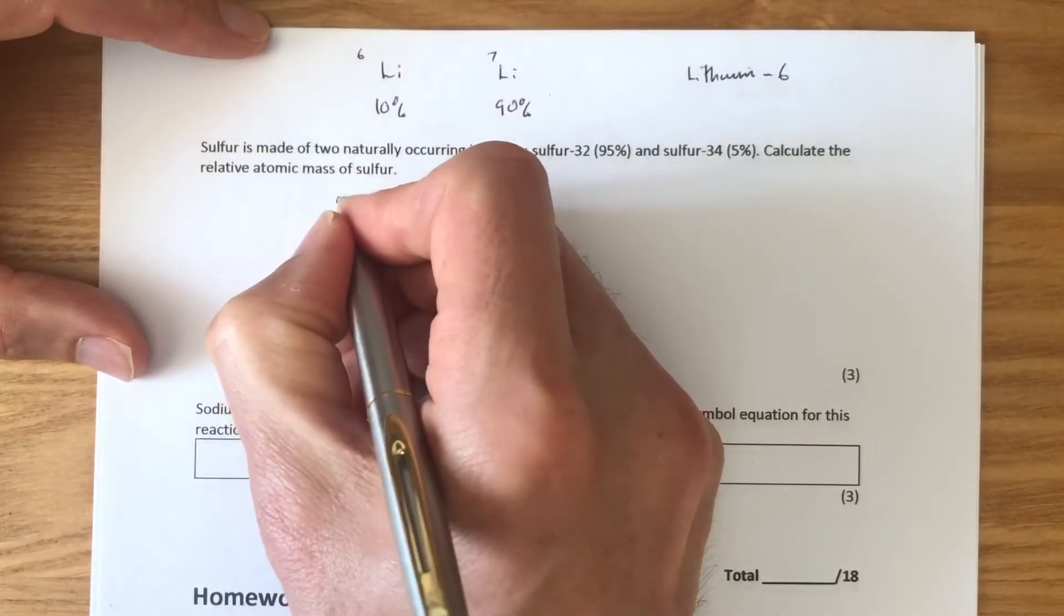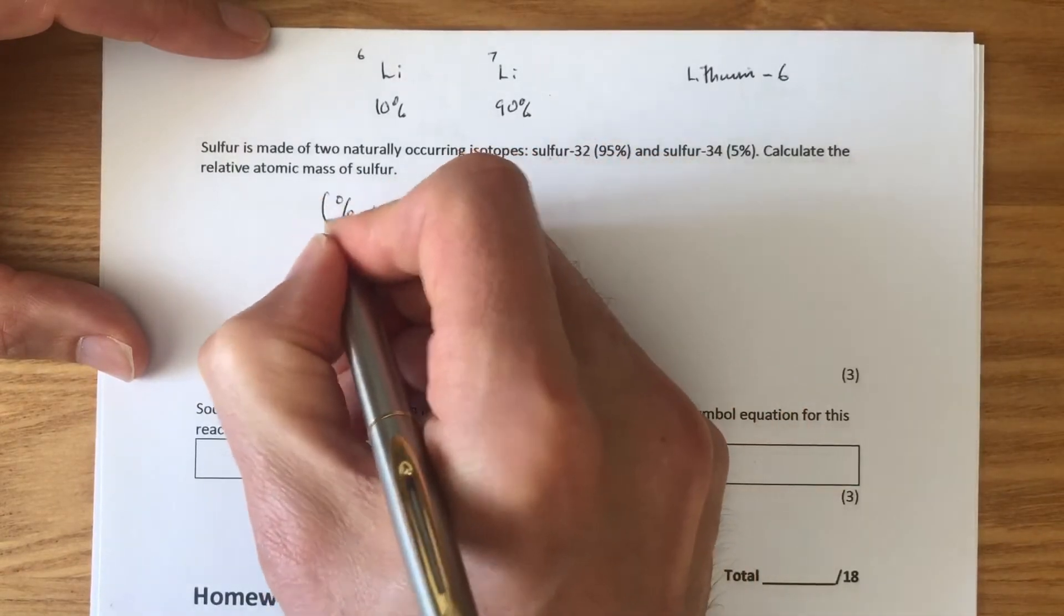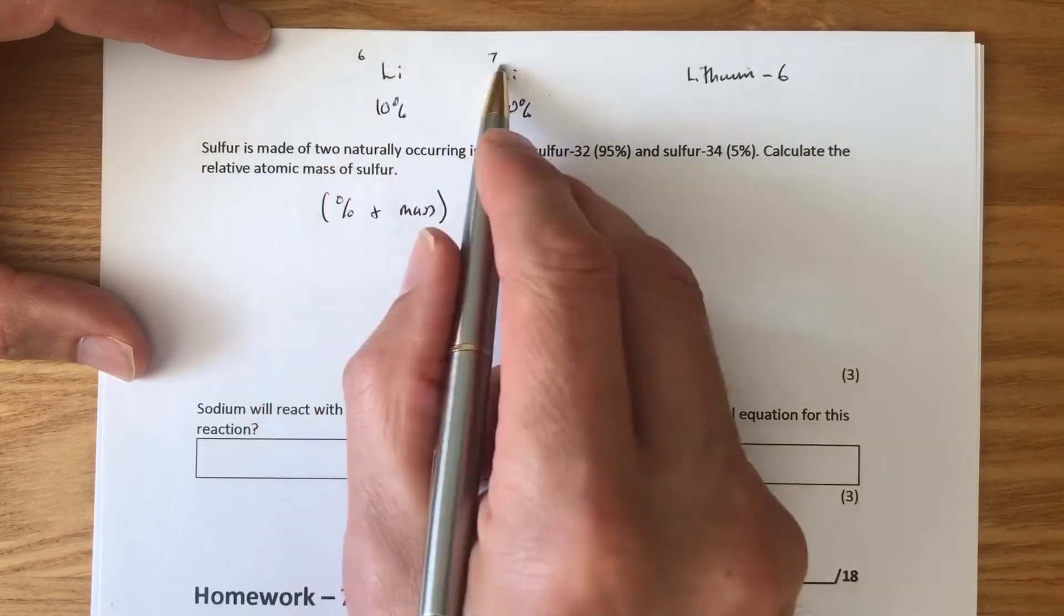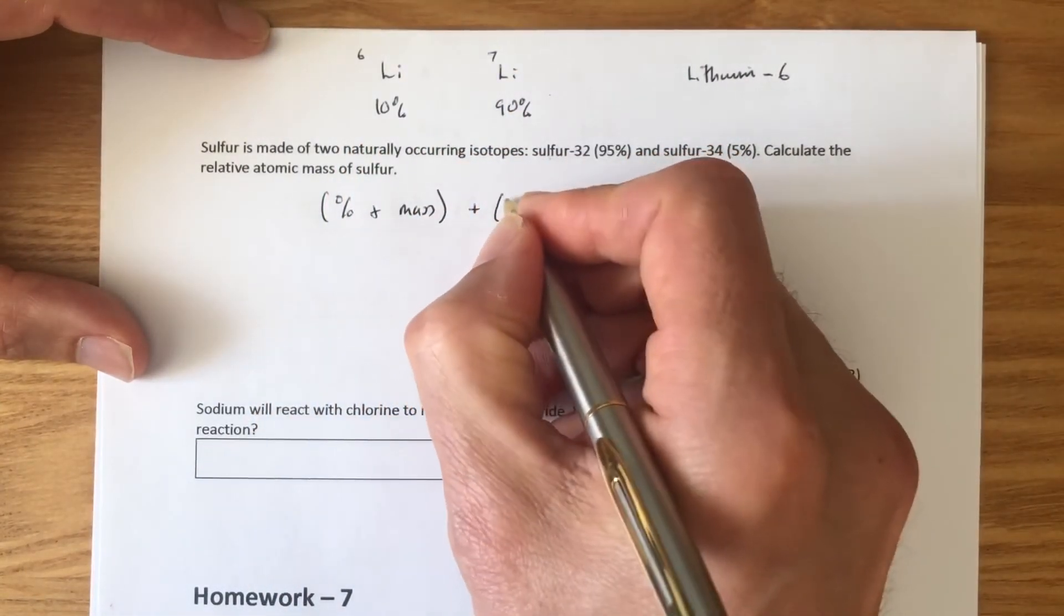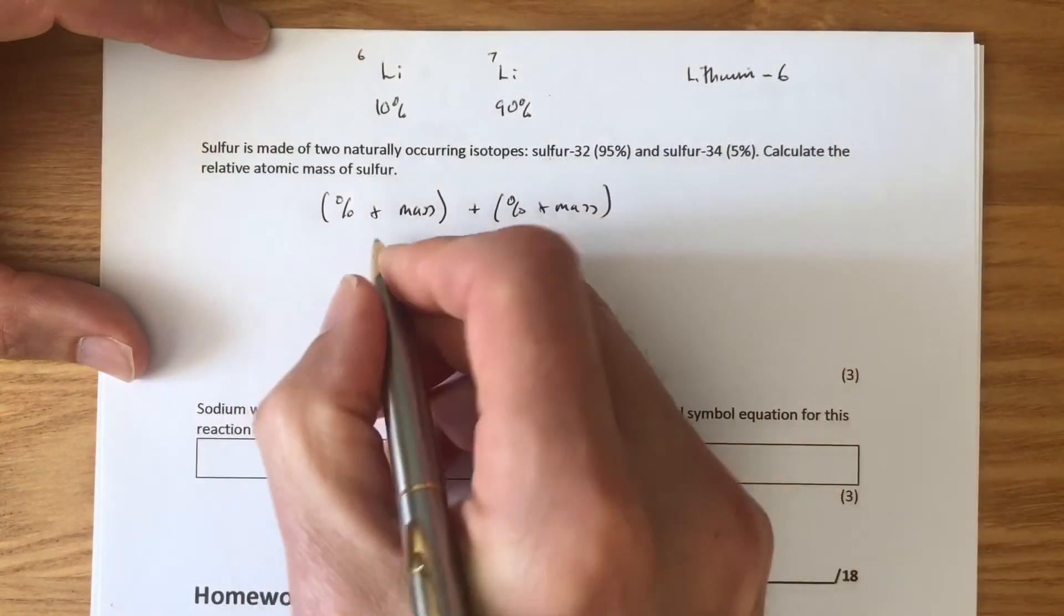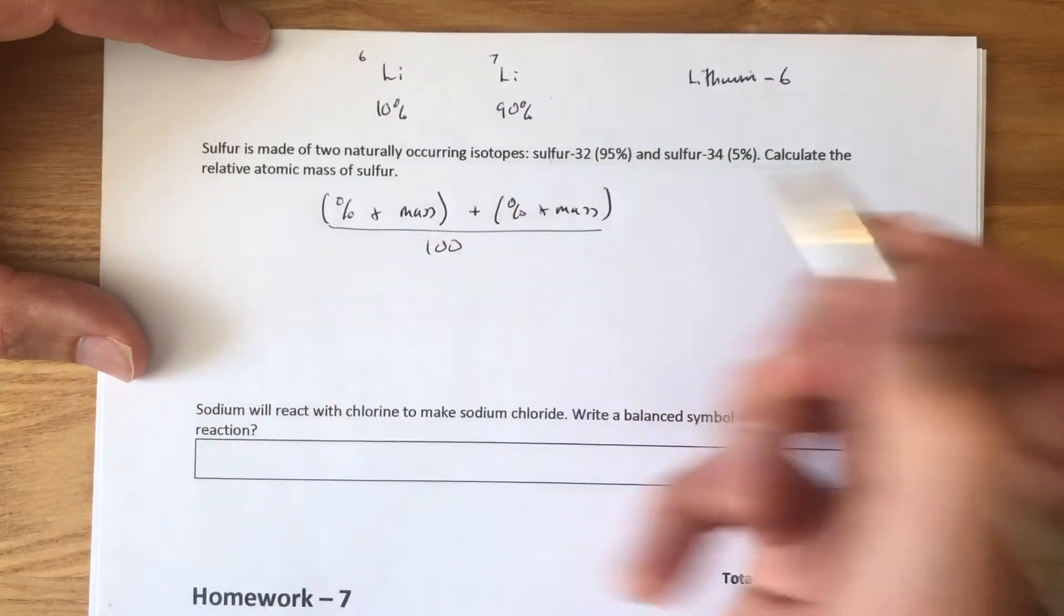So, we need to learn this formula now. Percentage times mass. We need to do that in brackets for every isotope there is. Here there's two isotopes and in this question there's two isotopes. We're going to do it twice. If there are three isotopes, we'd do it three times. If there's four isotopes, we'd do it four times. And then we need to add those together. Then we divide by 100. And that gives us our answer.